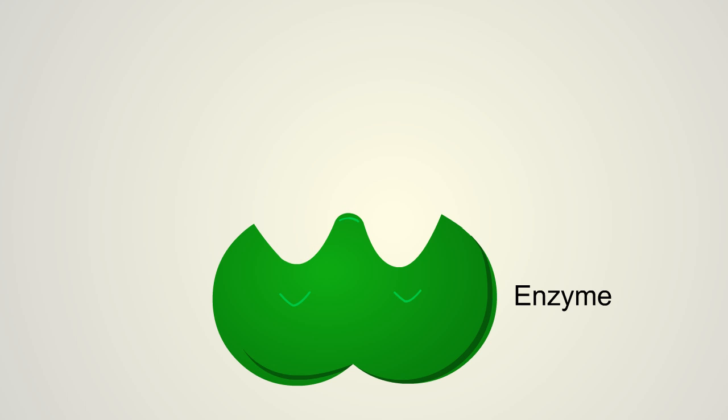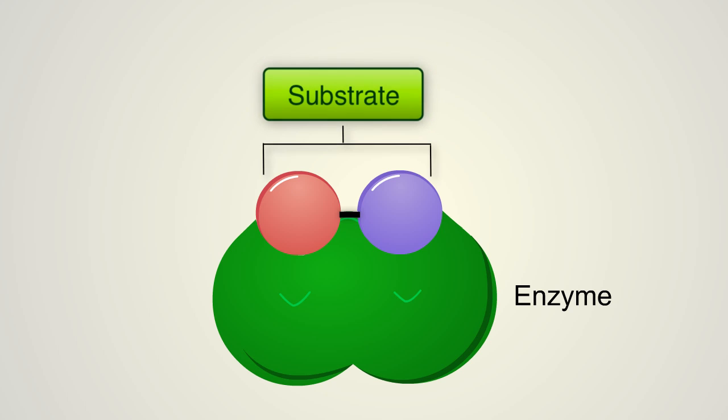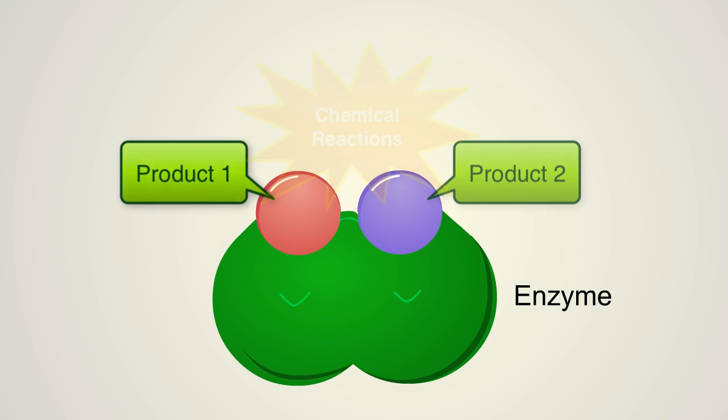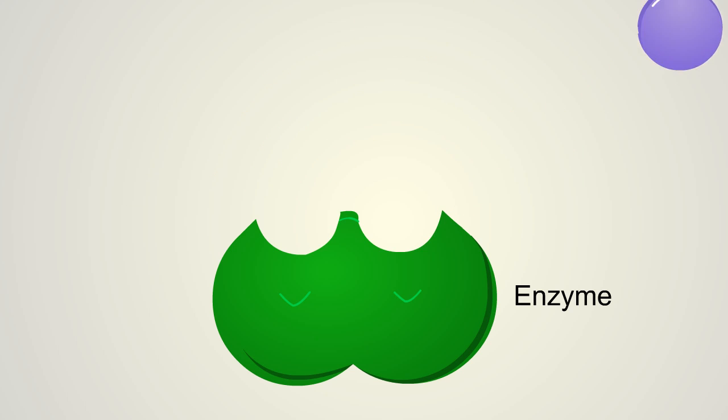An enzyme works by binding to molecules, called substrates, at its active site. The job of the enzyme is to convert the substrate into a different product or products through a series of chemical reactions. Following the reactions, the products are released and the enzyme is free to act on another substrate.